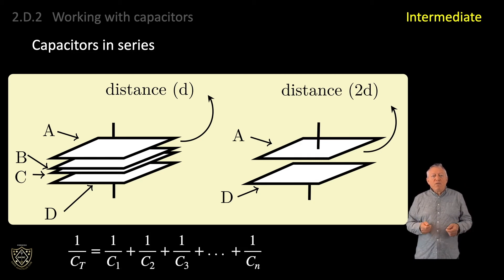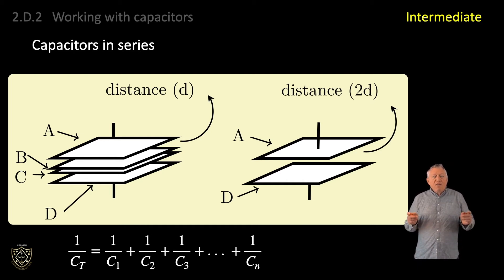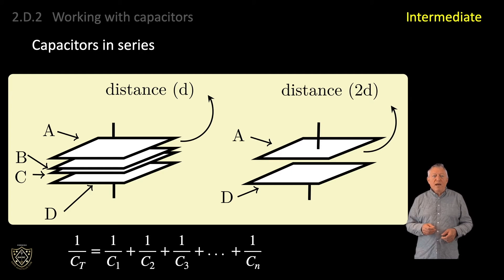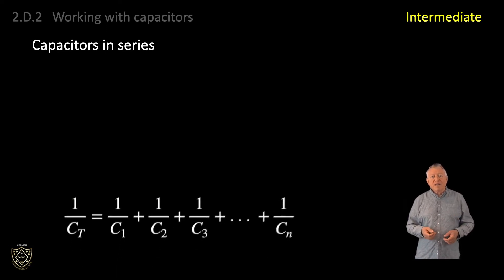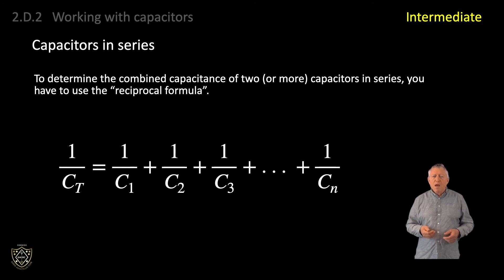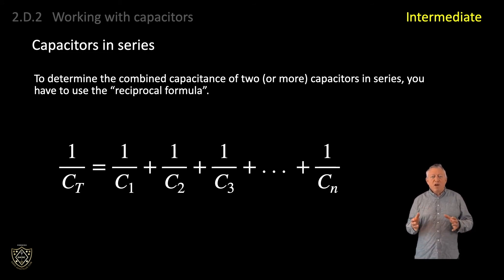Again, you will recall from the formula we learnt in syllabus item 2D1, C equals KA over D, that the capacitance is inversely proportional to the distance between the plates. This is why the reciprocal formula is used to work out equivalent capacitance of a number of capacitors in series. Don't worry if you can't visualise why capacitors in series reduce the overall capacitance — it is enough to apply this formula.